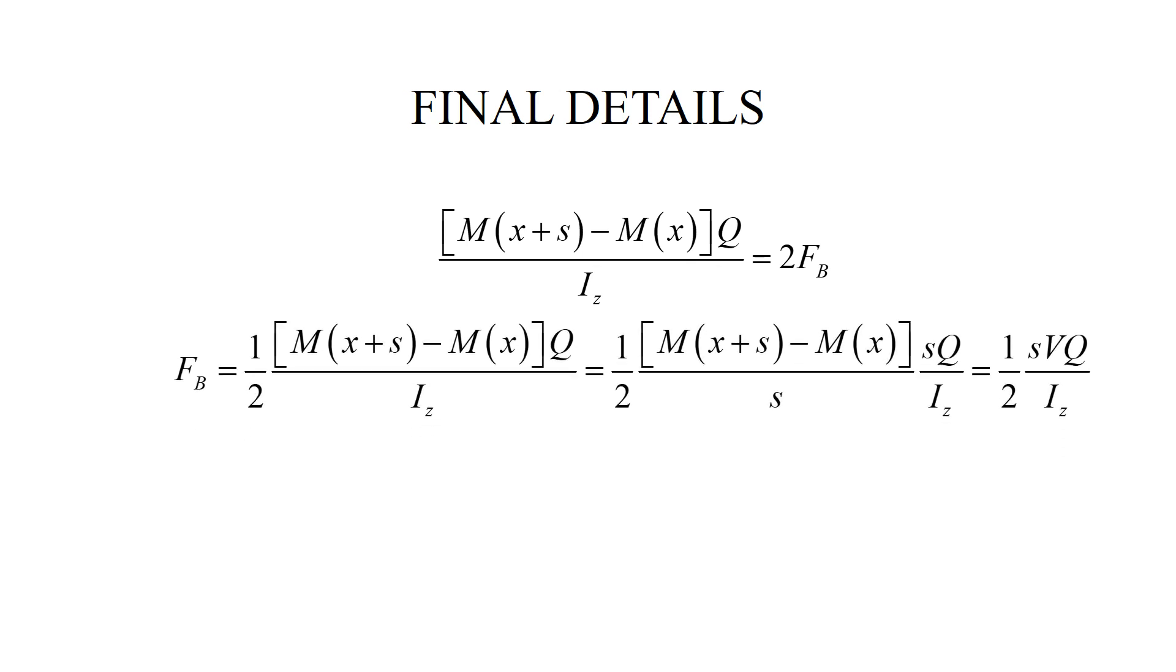We can do the final details. From the previous page, we have this equation. Now to calculate the force FB, first I divide by two. And now I divide by S and multiply by S. The purpose for this is very simple: I can approximate this expression by the shear force. So one half is retained, this part becomes the shear force, and then I have SQ over Iz.